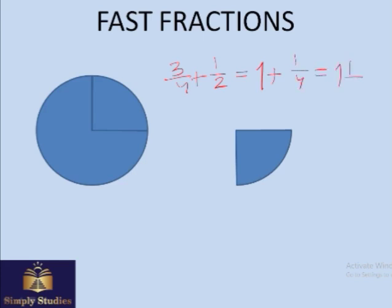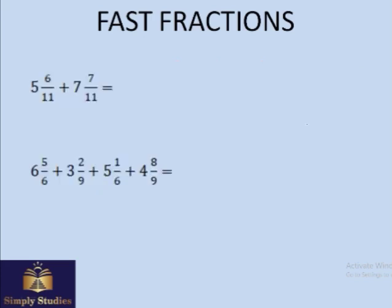So three quarters plus one half gives you one whole plus a quarter. You can also build a visual net like this. Let's do some problems. Here, 5 plus 7 gives you 12, and 6 plus 7 add up to a little more than 11 — they add up to 13, which is 2 more than 11.